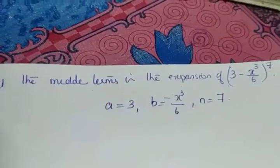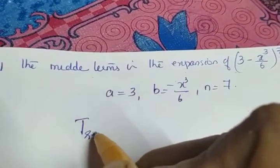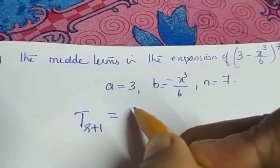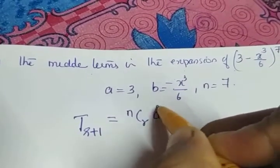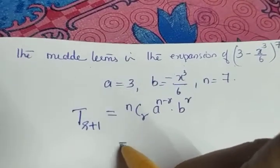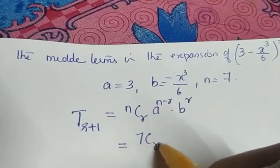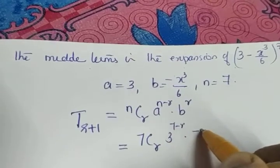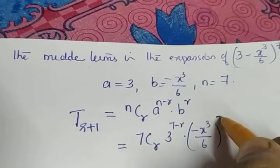We will write the general term. To find the middle term, we start with the general term. The general term T(r+1) is equal to nCr into a raised to n minus r into b raised to r. So here it will be 7Cr into 3 raised to 7 minus r into minus x cube by 6, the whole raised to r.